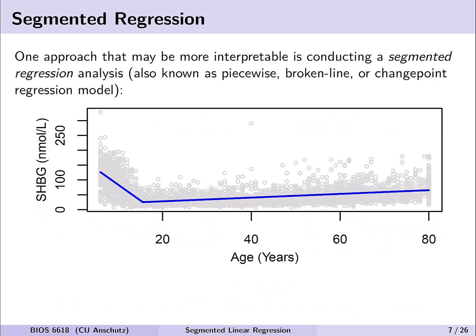Fortunately, one strategy we could use is known as segmented regression, which offers higher interpretability. It's also known as piecewise, broken line, or change point regression, because essentially we're identifying a change point — a crook or elbow in our data — and it's broken into two separate segments, each fit by linear trends.